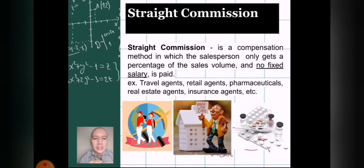First, when you say straight commission, from the word itself, it's given straight, derecho. It is a compensation method in which the salesperson only gets the percentage of the sales volume and there is no fixed salary. An example of those would be travel agents, retail agents, pharmaceutical agents, real estate agents, and insurance agents. Again, this does not mean exclusively that all of the workers that I have mentioned are straight commission, we are just using examples.